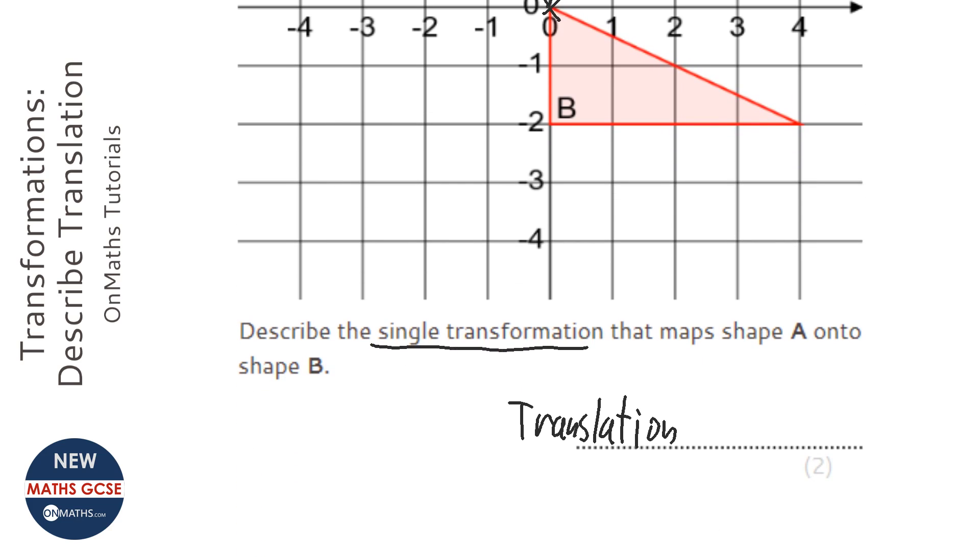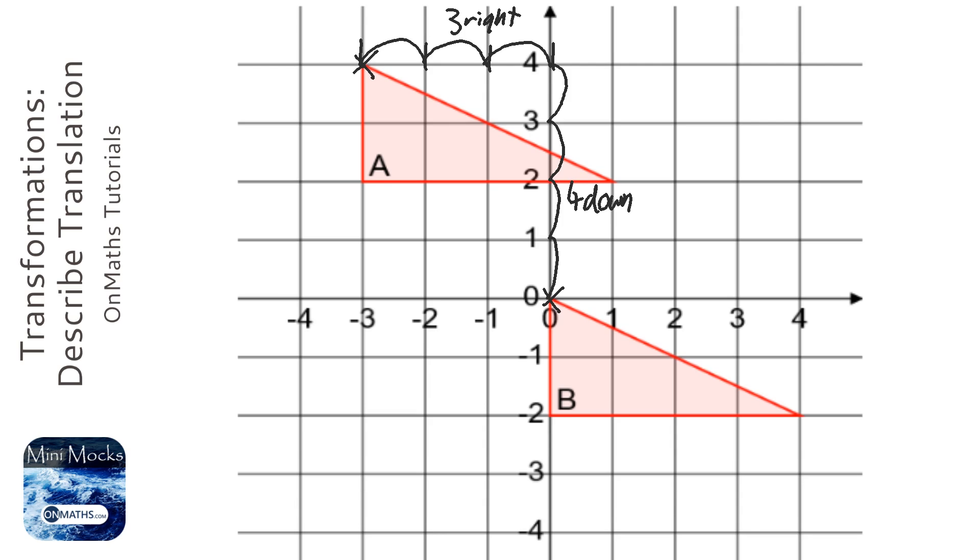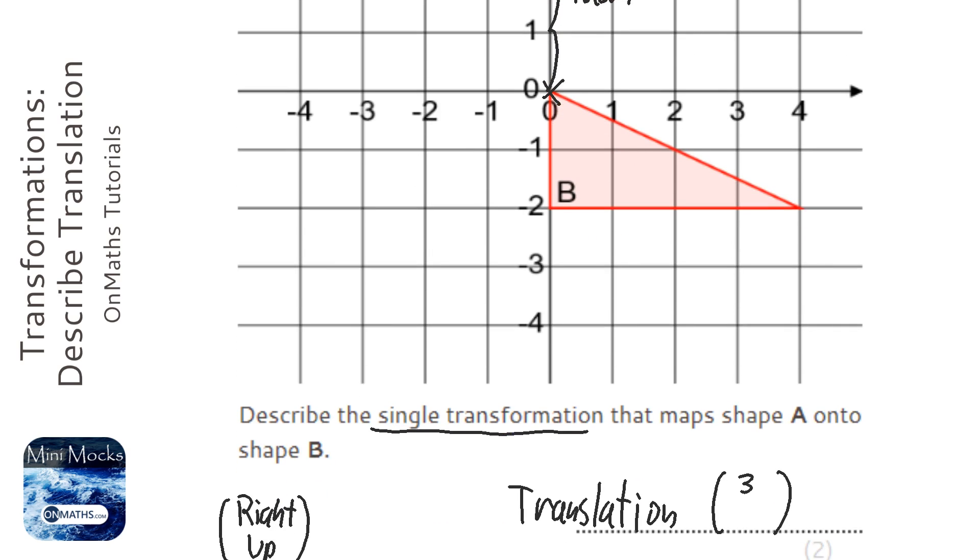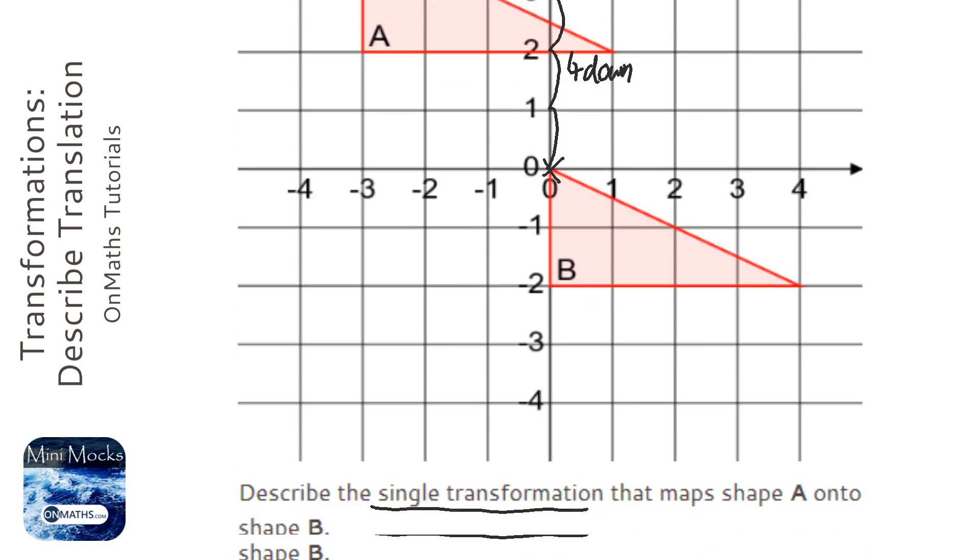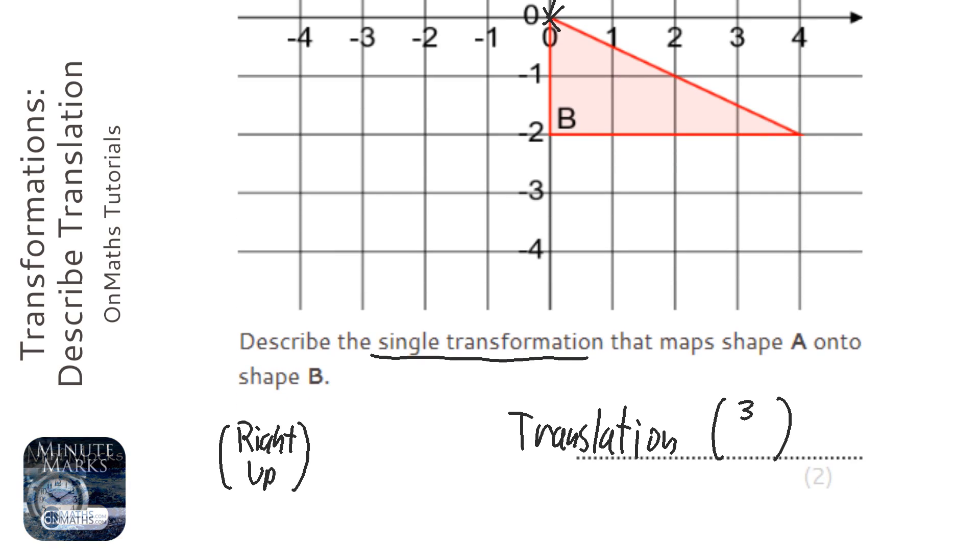The way we show this is with a little vector. The top one shows how far right you've gone, the bottom one how far up you've gone. We've gone three right, so that's nice and easy, so three. But here we've gone four down, and the bottom one always shows how far up we've gone. So we've gone minus four up, otherwise four down. If the top one is left then it will be a negative number, if the bottom one is down then it will be a negative number.